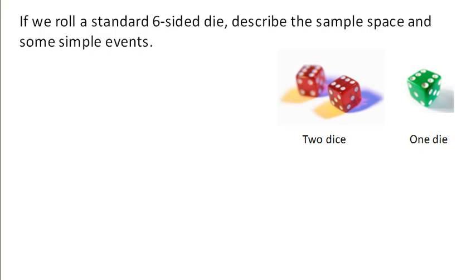So to start out probability, we need to talk about events: simple events, compound events, and sample space. The sample space is all the possible simple events, and a simple event is simply an outcome of an action or experiment that can't be broken down any further.